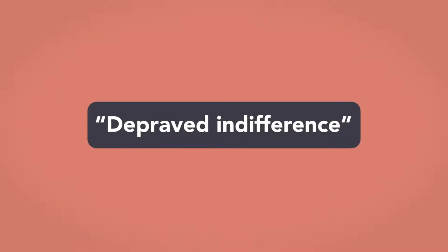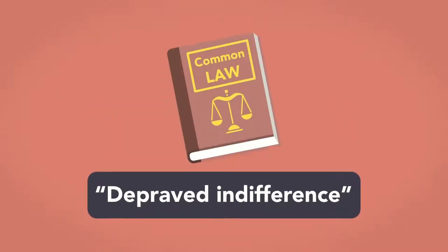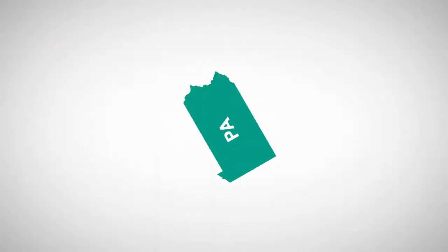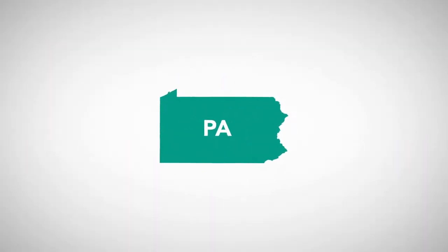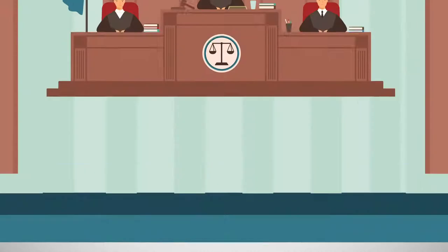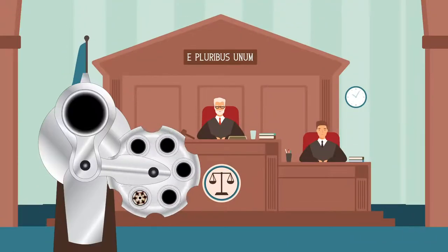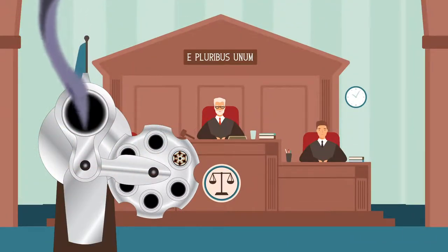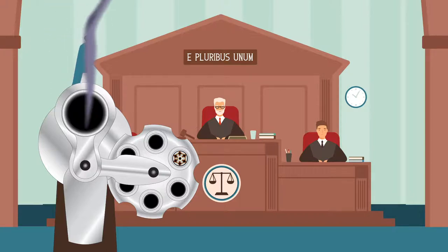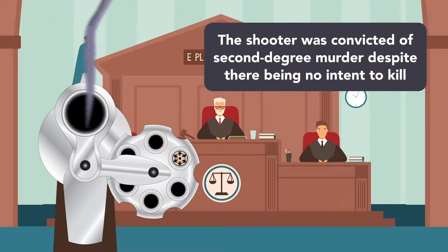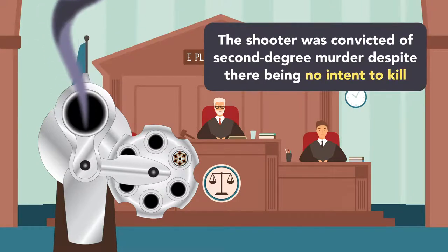The depraved indifference standard under the common law, wherein a person could be convicted of murder without intent to kill, was exemplified in a Pennsylvania case, Commonwealth v. Malone. There, a person was convicted of murder when a modified game of Russian roulette resulted in the death of one of the participants. The shooter was convicted of second degree murder despite there being no intent to kill.